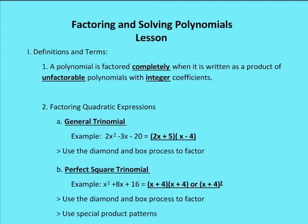A polynomial is factored completely when it is written as a product of unfactorable polynomials with integer coefficients. For example, 2x squared minus 3x minus 20 is a general quadratic trinomial that is not yet factored completely. We can factor it into the expressions 2x plus 5 and x minus 4. We call these the factors.